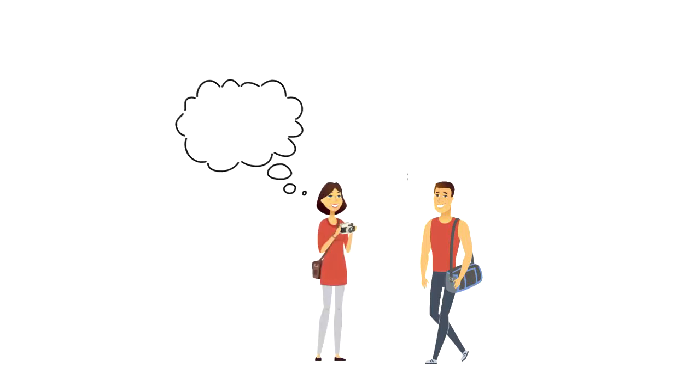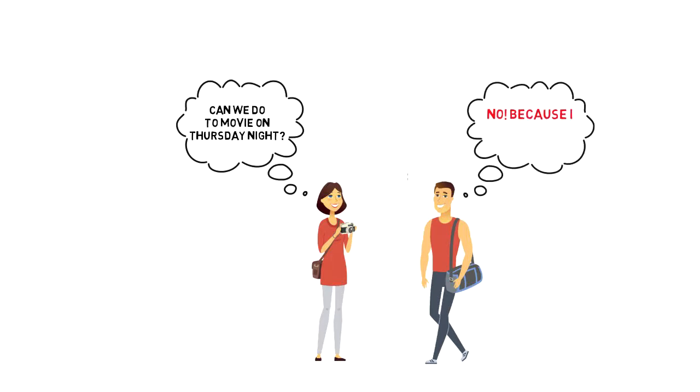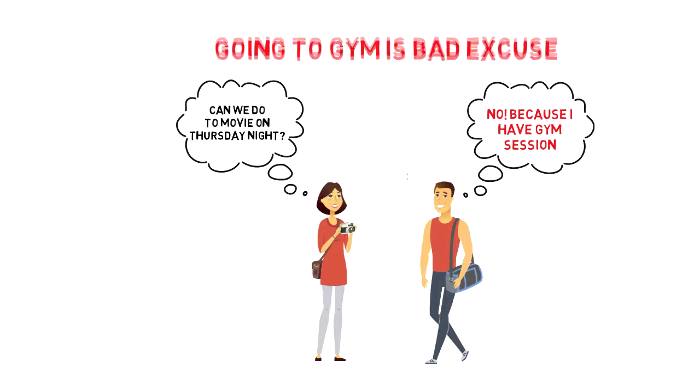Let's use a gym example as it is a good excuse and we will make it bad. If my wife is asking me, can we go to the movie on Thursday night? And I say no, because I have a gym session, then from my wife's perspective, going to the gym is a bad excuse because her goal was not fulfilled.